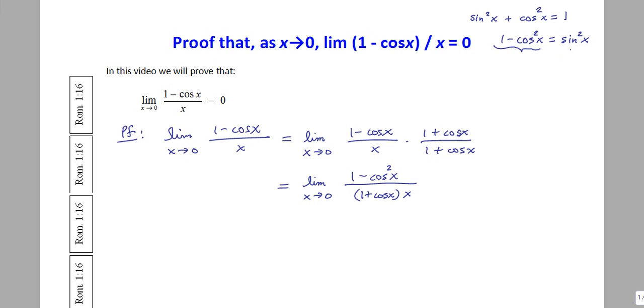And so now we will bring this result to bear over on the numerator. Okay, so I will write this as the limit as x tends to 0 of sine squared x over x times 1 plus cos x.